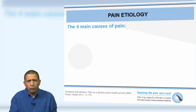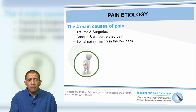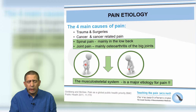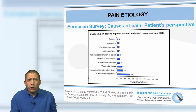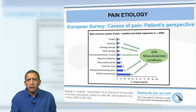What is the etiology of pain? There are four main causes: trauma and surgeries, cancer and cancer-related pain, spinal pain mainly in the low back, and joint pain mainly osteoarthritis of the big joints. The musculoskeletal system is a major etiology. Looking at the European survey on patient perspectives, more than 60% of causes of chronic pain are musculoskeletal conditions.